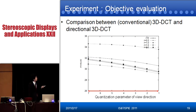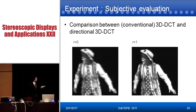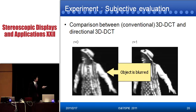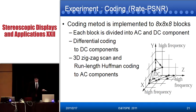This is the result — the objective evaluation. You can see the solid line, which is the conventional result. The case of parameter R equals 1 shows a very good result. For the subjective evaluation, this is a comparison between conventional 3D DCT and directional 3D DCT. You can see the conventional method shows block artifacts, but the proposed method overcomes these blocks. These are the coding performance results. The coding method is implemented on 8×8×8 blocks: each block is divided into AC and DC components like the JPEG standard, with differential coding for DC and 3D zigzag scan with run-length coding for AC components.